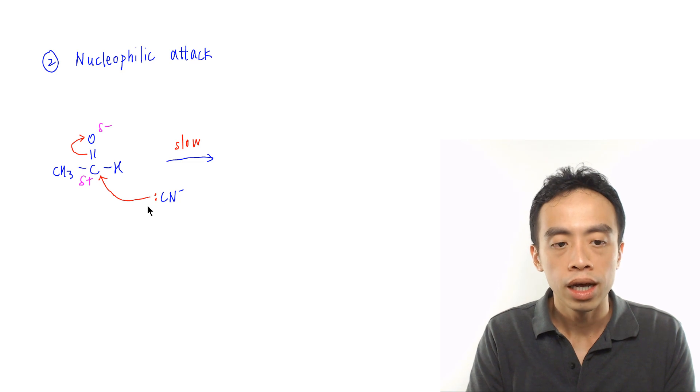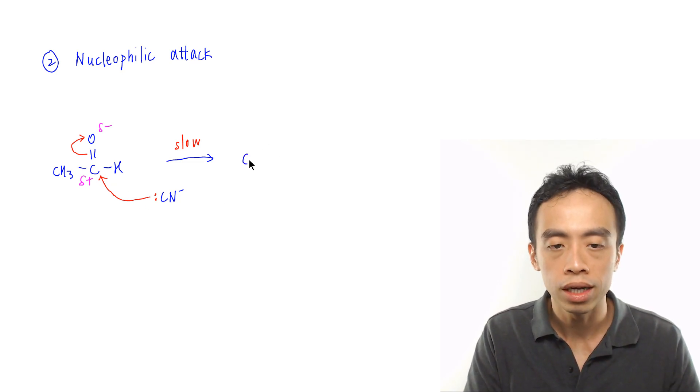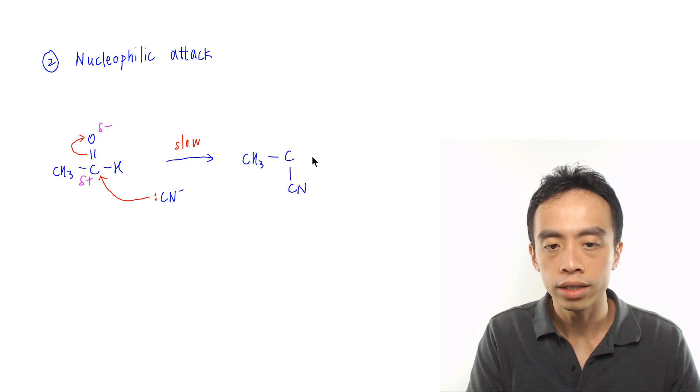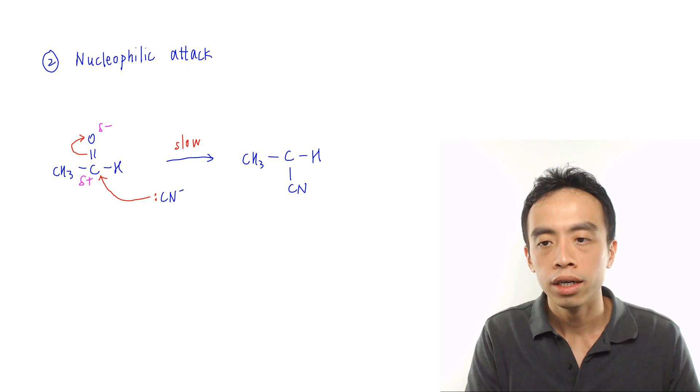What I'll form is a carbon-carbon bond. So this nitrile is added to carbon. I'll have a CH₃. Then the nitrile is here. The hydrogen will be here.